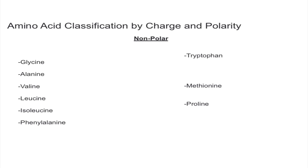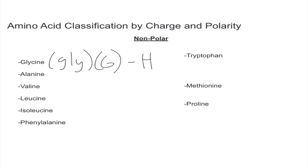I will draw only the side chain, except for proline, for which I will draw the whole amino acid. Starting with our non-polar amino acids, the simplest amino acid is glycine, abbreviated GLY or G. Its side chain is composed of just one hydrogen, so this amino acid would actually have two hydrogens in its structure.